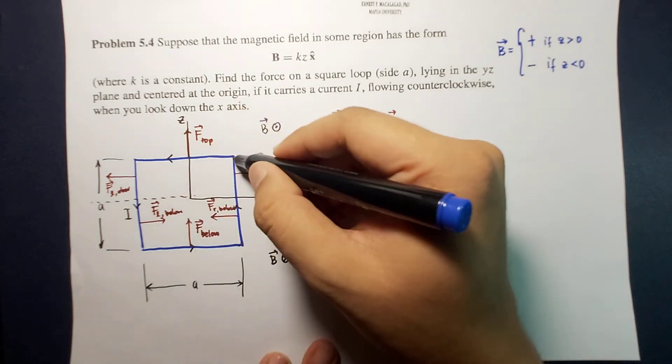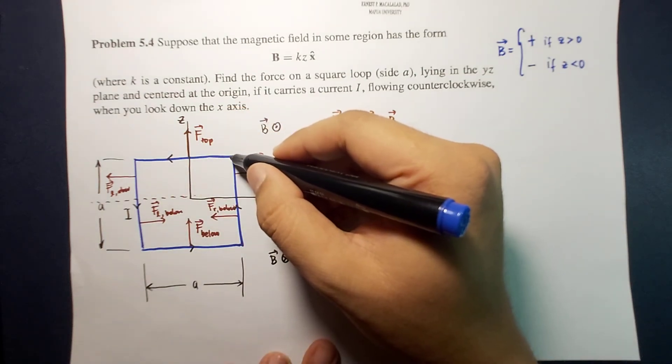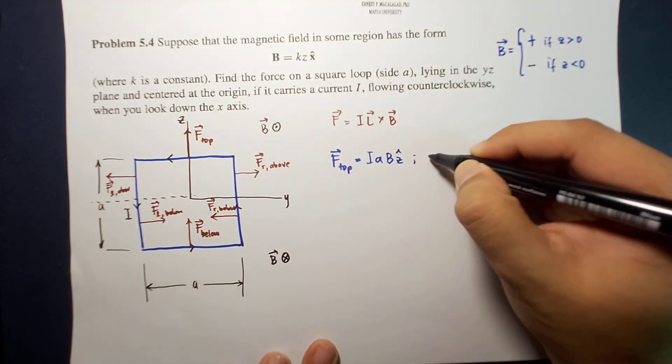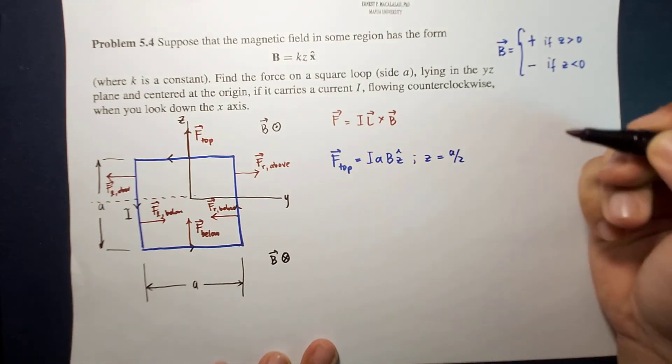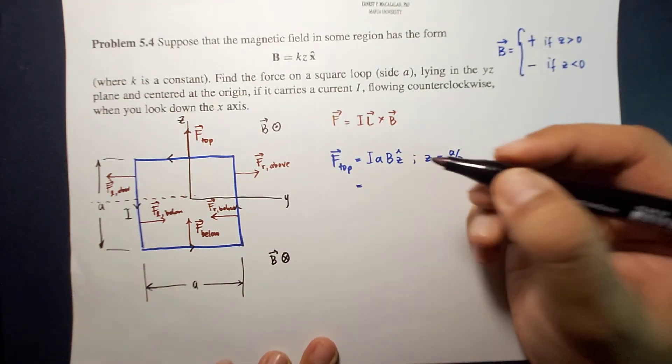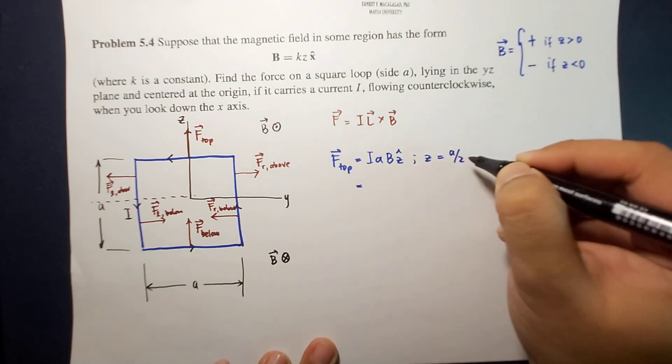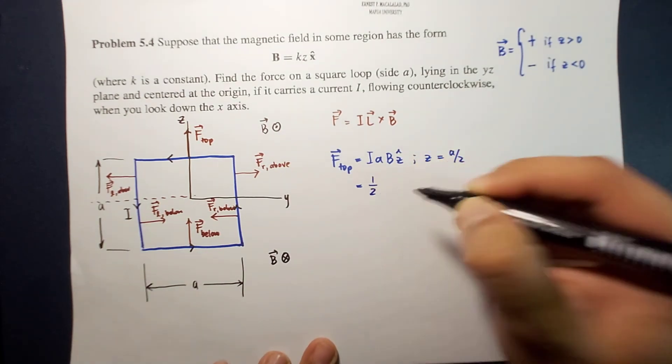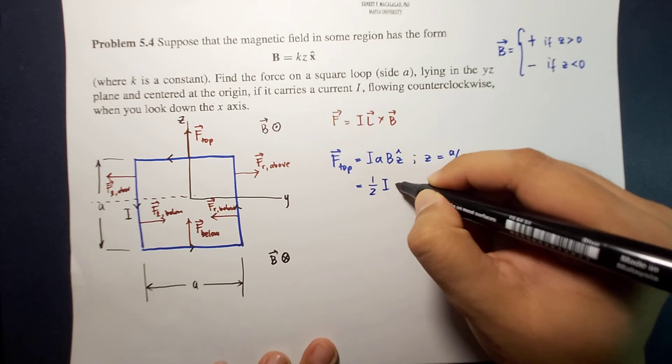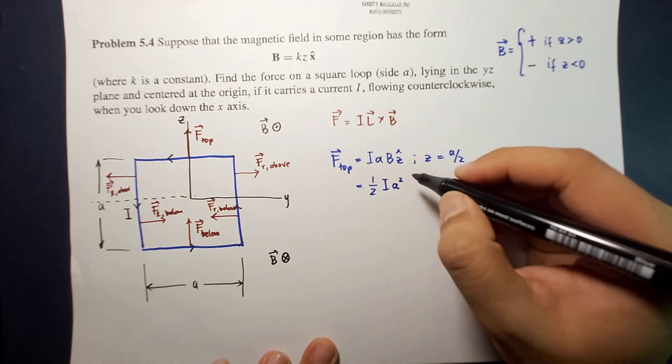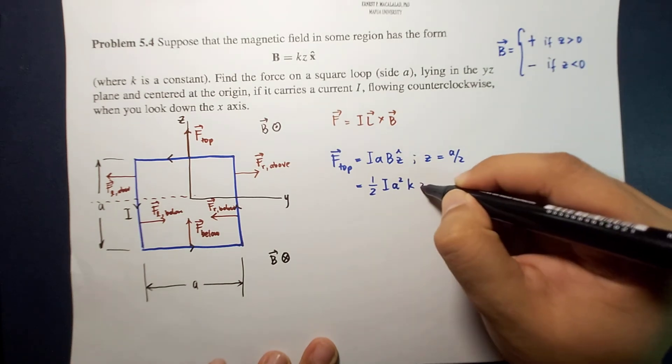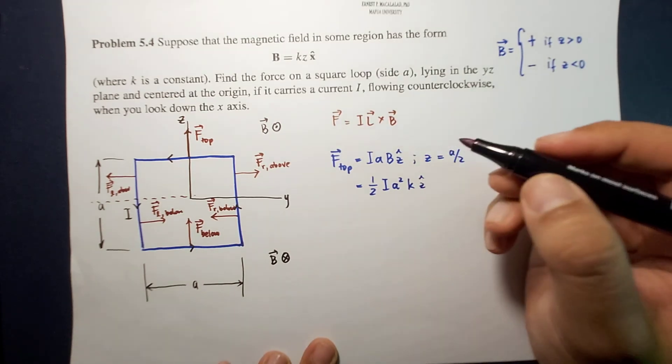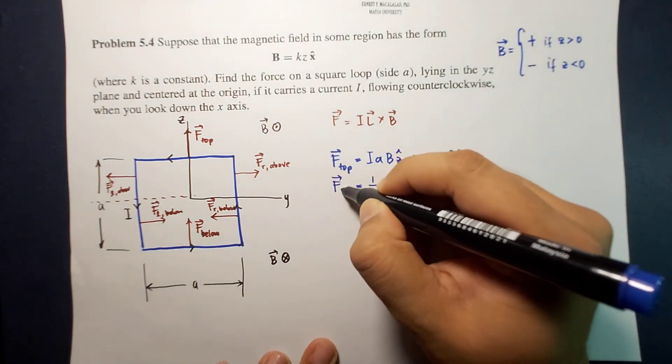Okay, so in this case, the location of z is a over two. So therefore F top would be equal to one half I a squared k z-hat. So this is your F top.